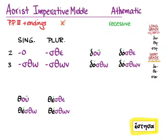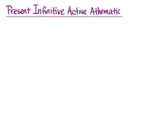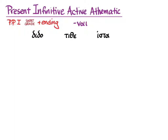Now we get to move on to the present infinitive active for athematic verbs. Here, we will use the first principal part with the short-grade stem and add the ending ναι for the infinitive active. With the short-grade stems from the present first principal part and the infinitive ending ναι, the accent is fixed in the syllable right before the ναι, and we get διδόναι, τιθέναι, and ἱστάναι for the present infinitive active.